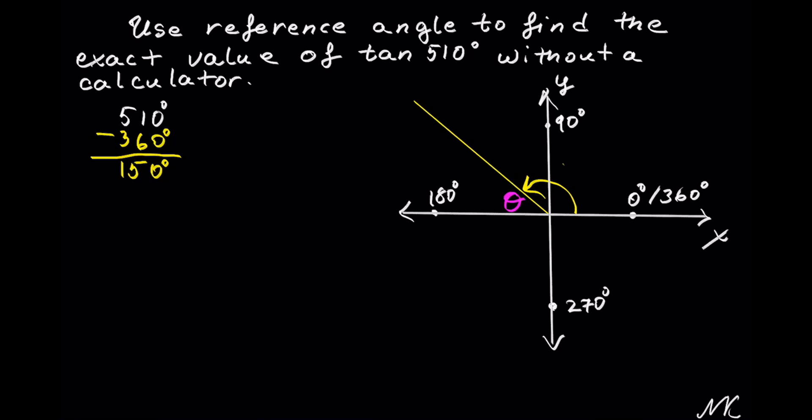If the coterminal angle is 150 degrees, and we know that half of the rotation is 180 degrees, so if we take 180 degrees and minus 150 degrees, we will get the reference angle theta, which is equal to 180 minus 150, 30 degrees.